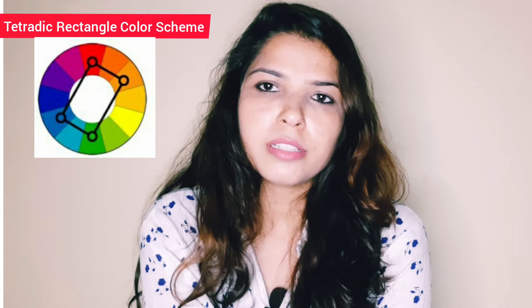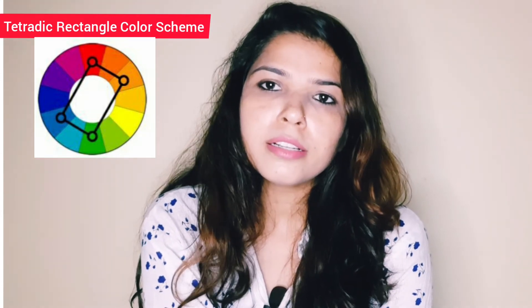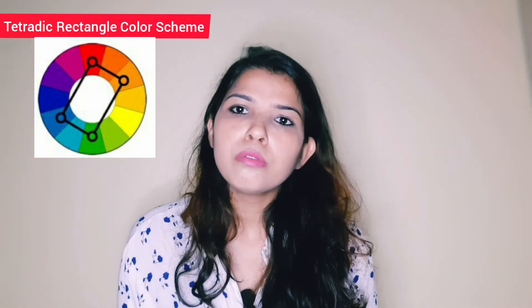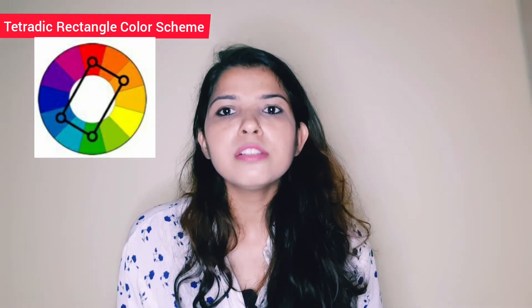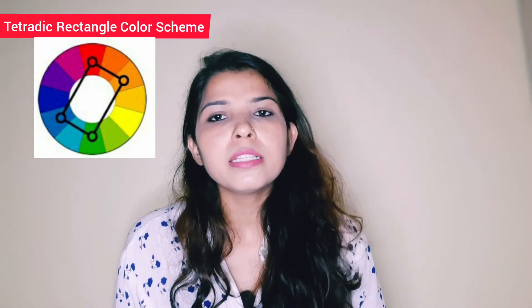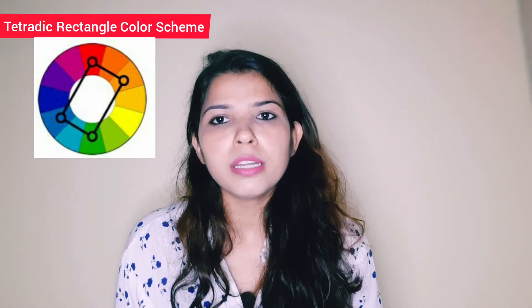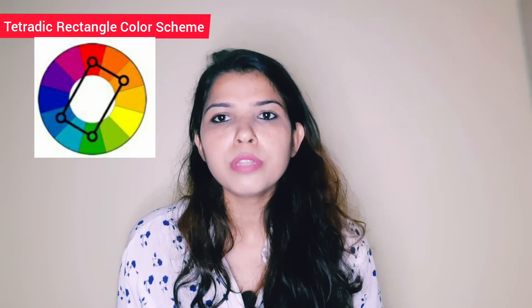Now we talk about the tetradic rectangle scheme. The tetradic rectangle scheme uses four colors, which are two complementary pairs. In the rectangle scheme, we take colors that are opposite to each other.